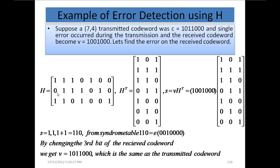Using the parity check matrix constructed previously, we take its transpose and multiply the received codeword V with H transpose. We focus only on positions with ones in V — this one and this one. Multiplying the first one by the corresponding column entries, and the fourth bit: zero times one gives zero, so the first result is one. Then: one times zero = zero, one times one = one — giving one. Then: one times one = one, and one times one = one; adding these two ones in modulo-2 gives zero. So the syndrome is 1 1 0.